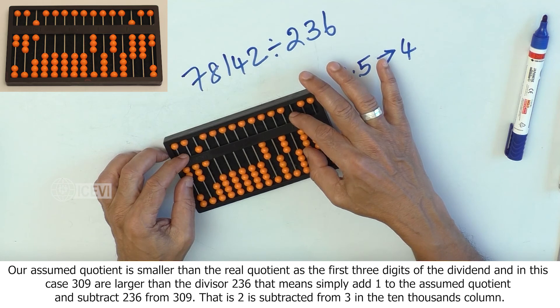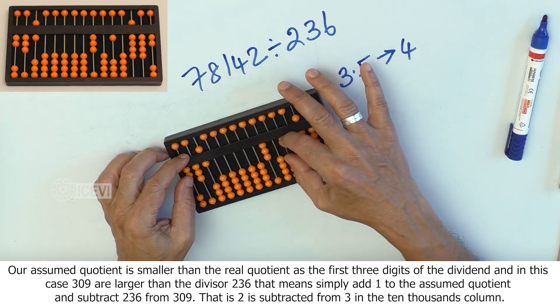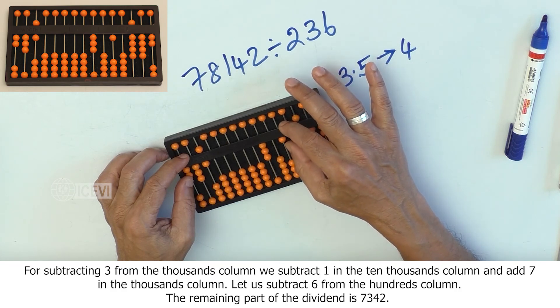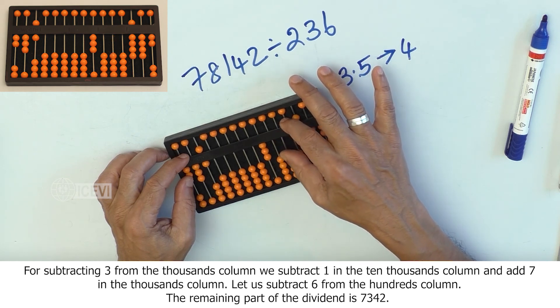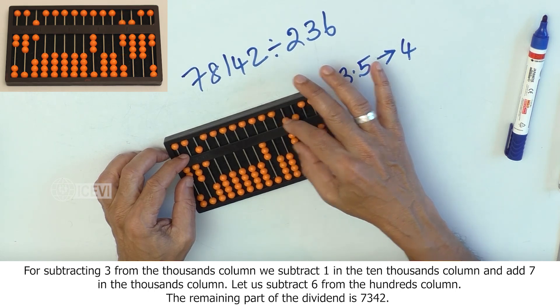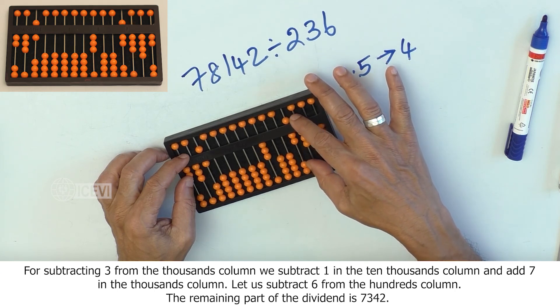...09 that is 2 is subtracted from 3 and for subtracting 3 from the 1,000 column, we subtract 1 in the ten thousands column and add 7 in the thousands column. Let us subtract 6 from the hundreds column. The remaining part of the dividend is 7342.